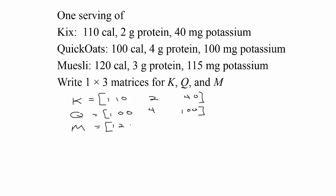For Muesli there's 120 calories, 3 grams of protein, and 115 milligrams of potassium: M equals [120, 3, 115]. For every cereal we put the corresponding entries in the same place—calories in the same place, protein in the same place, and potassium in the same place—then we can work with these matrices.